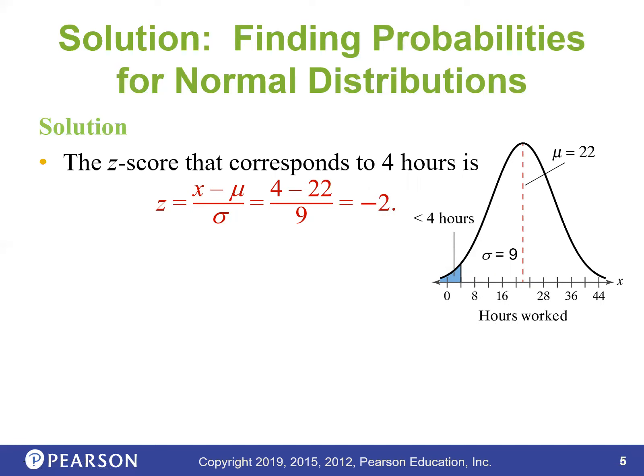Probability goes from zero to one, and the area underneath this curve is also zero to one. So the amount of area we get corresponds exactly to the probability — that's a light-bulb moment. Area equals probability, as long as it's a normal curve. You can find it either by table or by calculator. Can you find the area to the left of Z = −2?